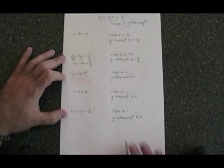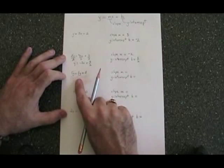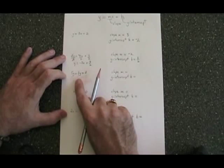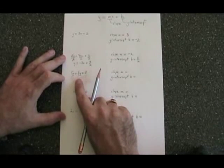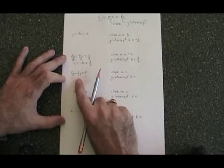In the third example, 5y equals 3y plus 7 does not have any x terms. We can still do the y equals mx plus b form though.